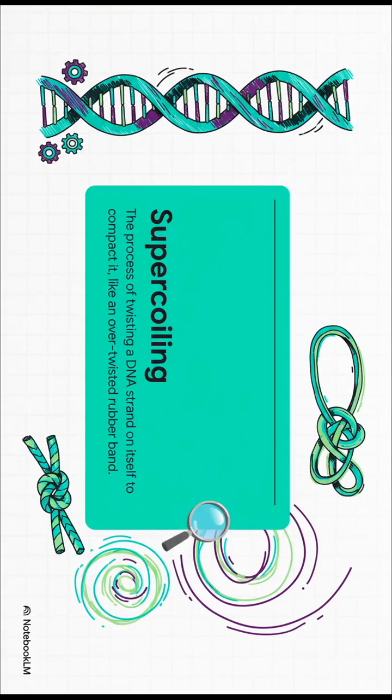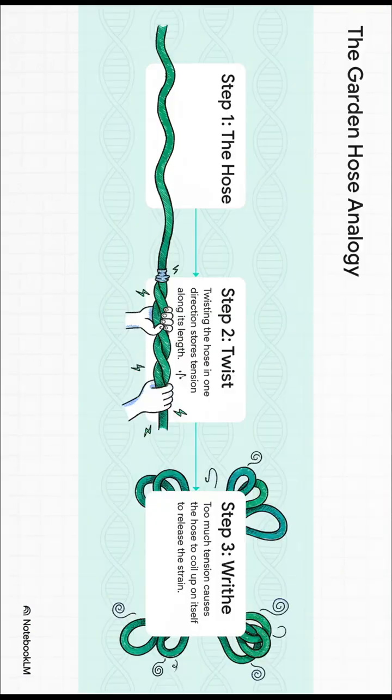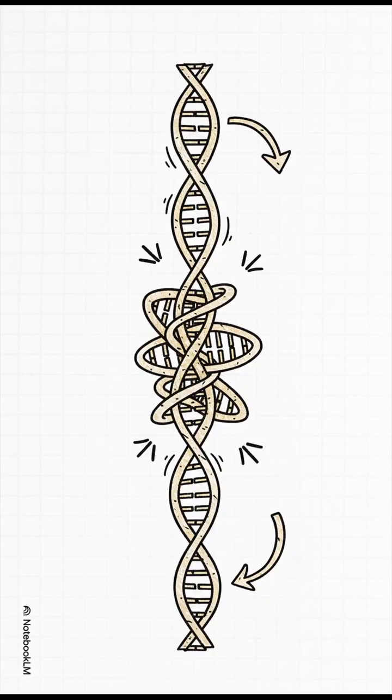The answer is an amazing trick called supercoiling. It's like over-twisting a rubber band. Think about it like a garden hose. As you start twisting it, you store up tension. Keep twisting, and eventually the hose coils up on itself. That coiling is called writhe.